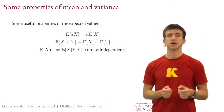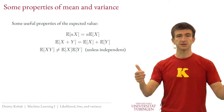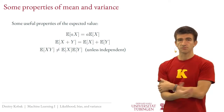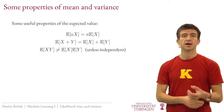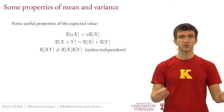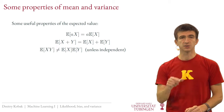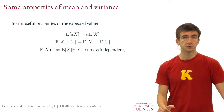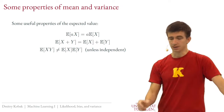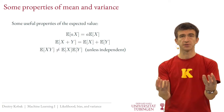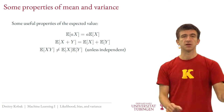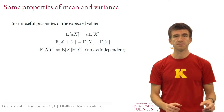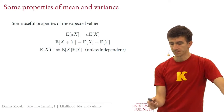Consider throwing two fair dice independently. The outcome of one die is not related to the other. If you ask for the expected value of the product of both values and write out the sum, it decomposes into two separate sums because the probability to get, say, two on one die and three on the other is just the product of those individual probabilities — that's how independent events work.